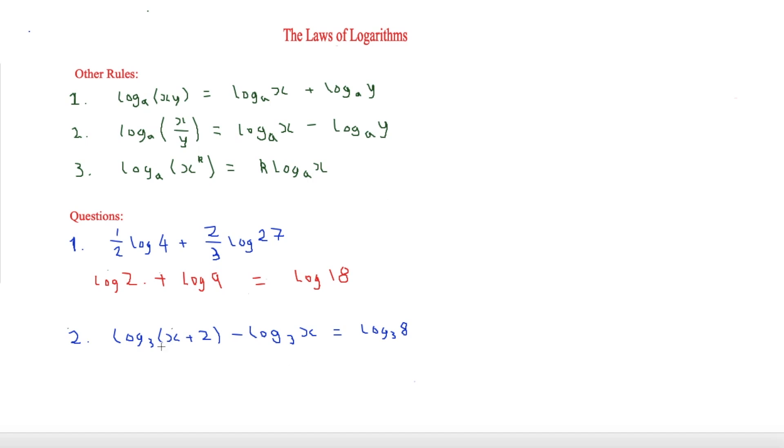The second one is slightly harder. We're going to use the second rule since we have a minus and both have the same base of three. We'll do division: x plus two over x. Then we type it in our calculator and it equals 1.893.